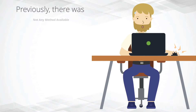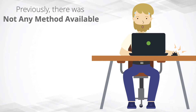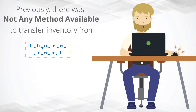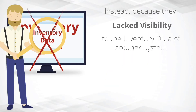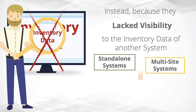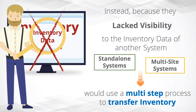Previously, there was not any method available to transfer inventory from one independent account to another. Instead, because they lacked visibility into the inventory data of another system, the standalone and multi-site systems would use a multi-step process to transfer inventory.